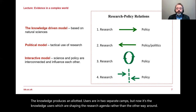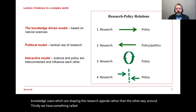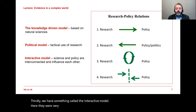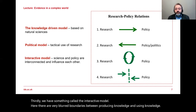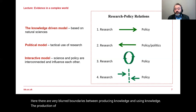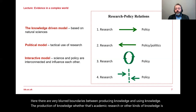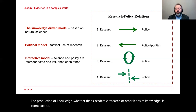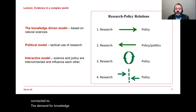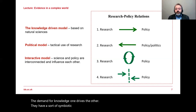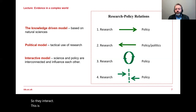Thirdly, we have the interactive model. Here there are very blurred boundaries between producing knowledge and using knowledge. The production of knowledge — whether academic research or other kinds — is connected to the demand for knowledge; one drives the other. They have a symbiotic relationship, they interact. This is not linear; it's much more complex.